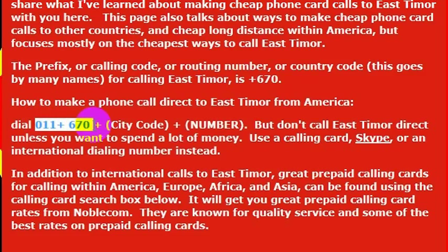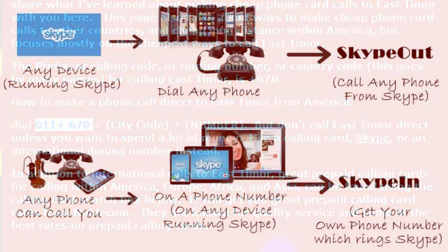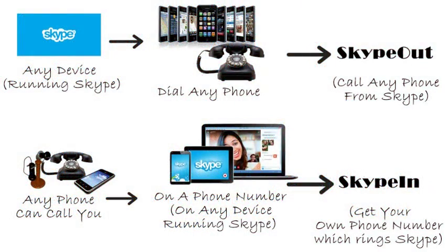That would be 011 670, the country code for East Timor. But I wouldn't really recommend calling direct — your phone company will charge you a lot of money.